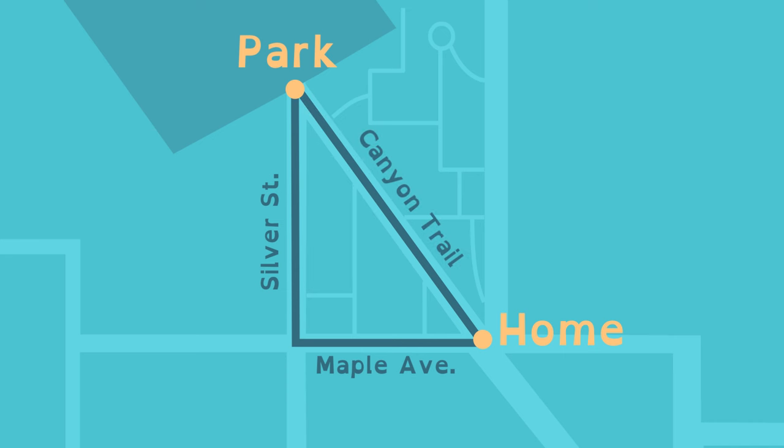She knows the two legs, Maple Avenue and Silver Street, are 3 and 4 miles long. Applying the Pythagorean Theorem: 3 squared plus 4 squared equals 25.